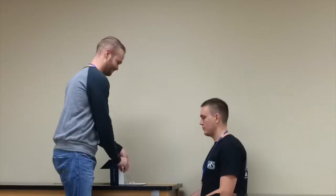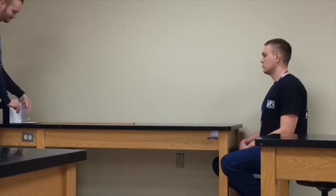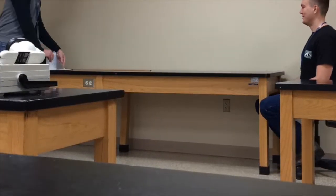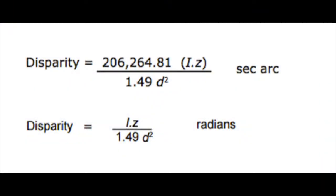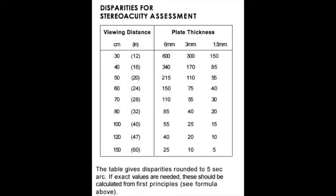And now for a demonstration of the test. Now that we have collected all the data through 10 trials at each of the 9 test distances, we are ready to convert the distances to stereo acuity measurements in seconds of arc. To do this, we will use the equation shown here. We will multiply the constant by the interpupillary distance times the average plate thickness, which in this case is 0.15 centimeters, and divide that by 1.49 times the viewing distance squared. We have also included a chart providing some shortcut estimations from the Frisbee test instructions.